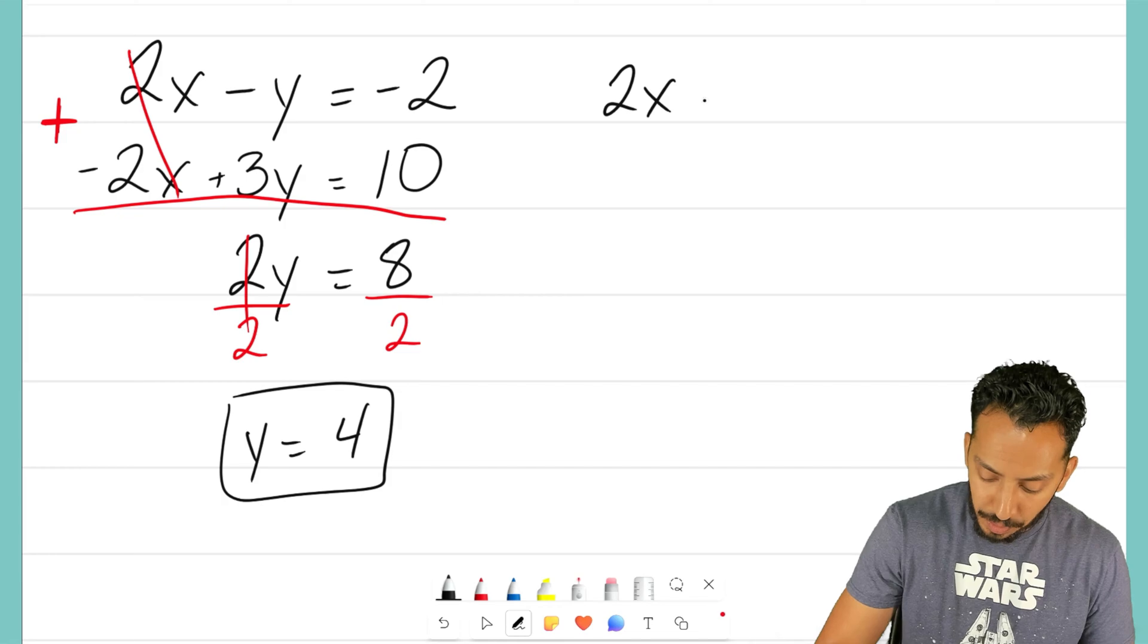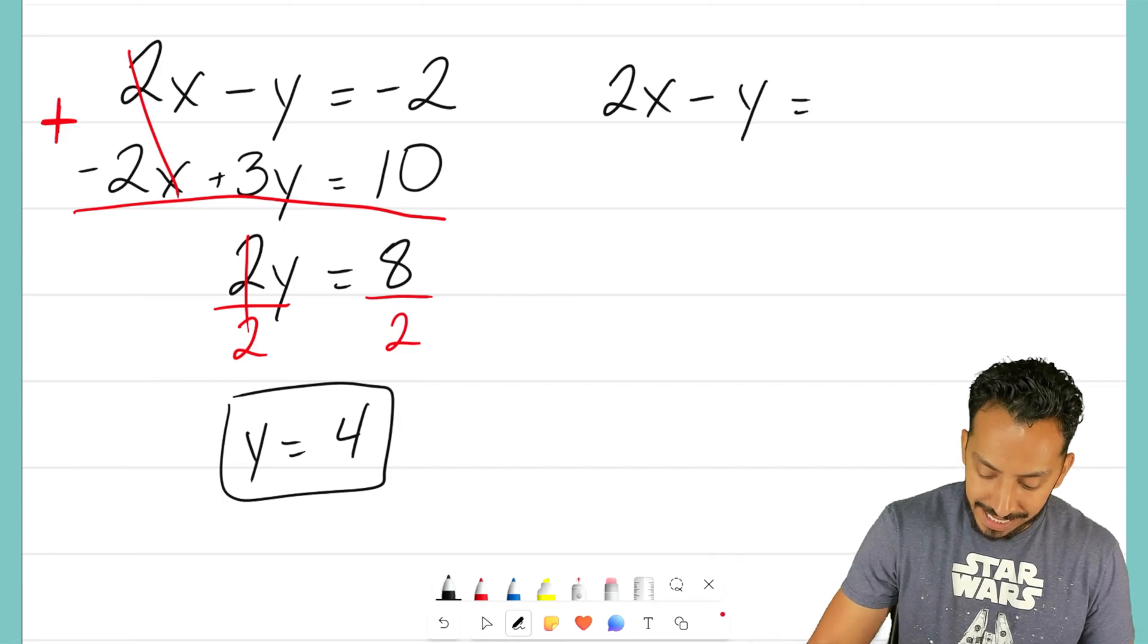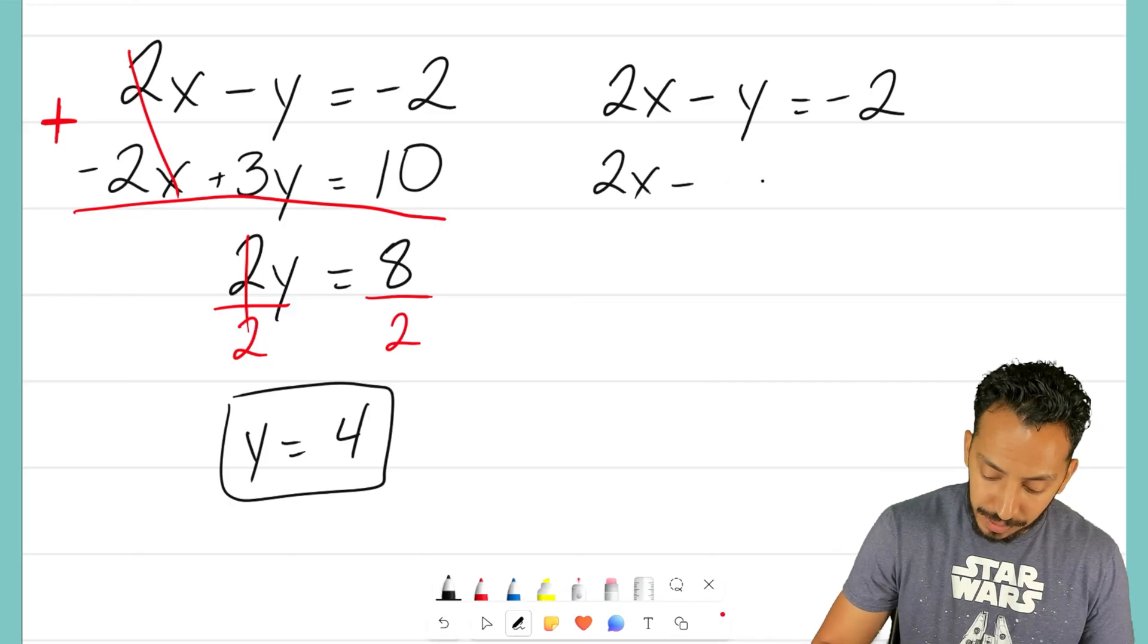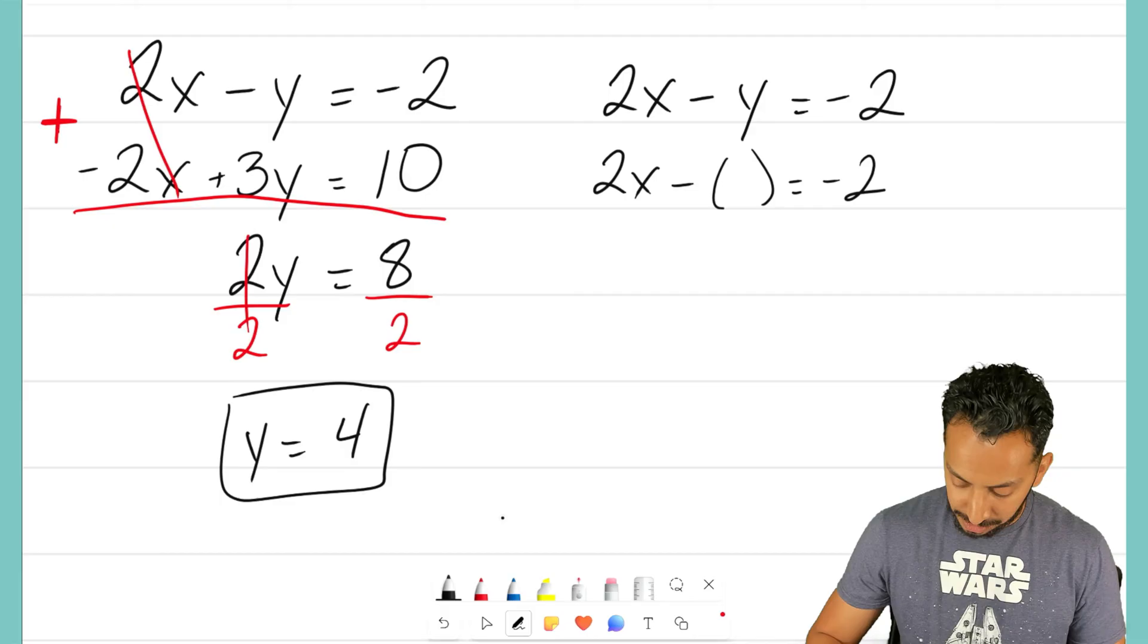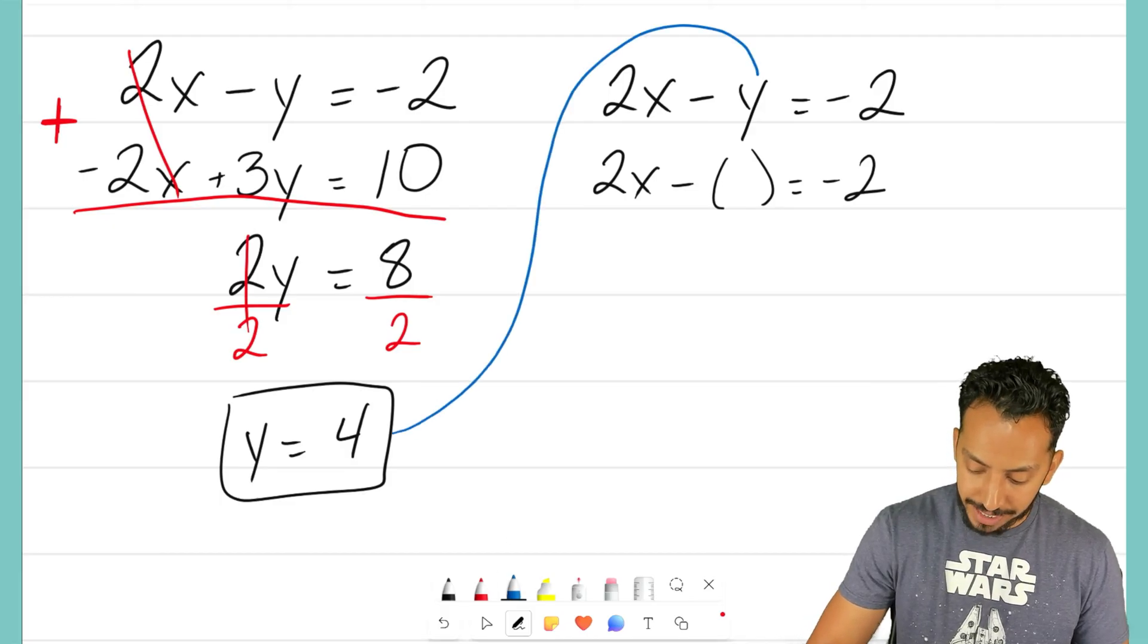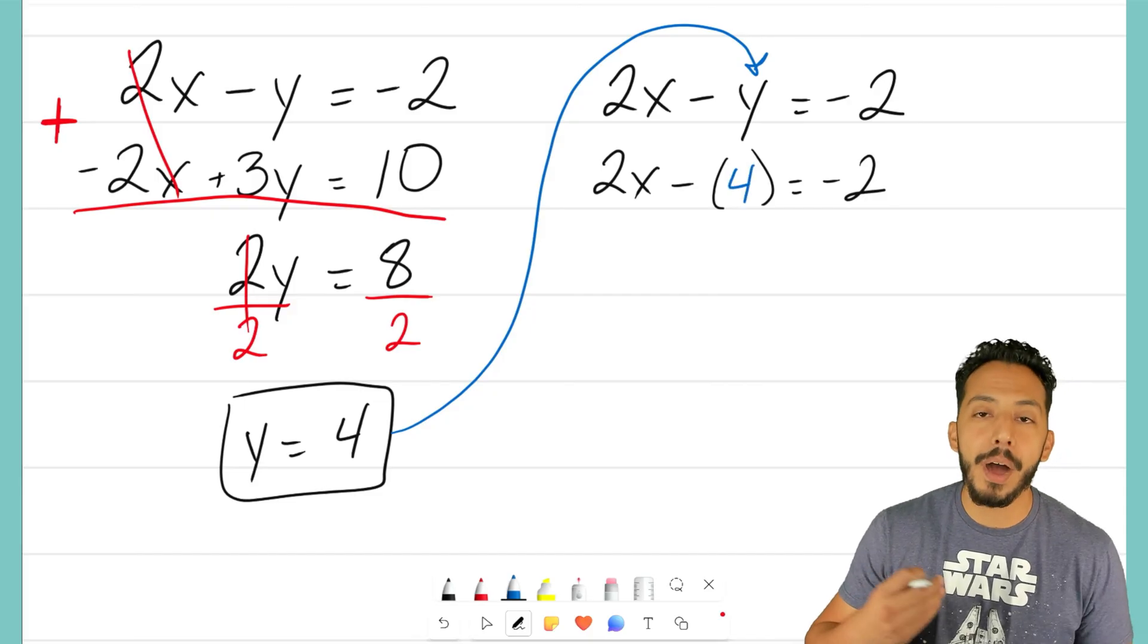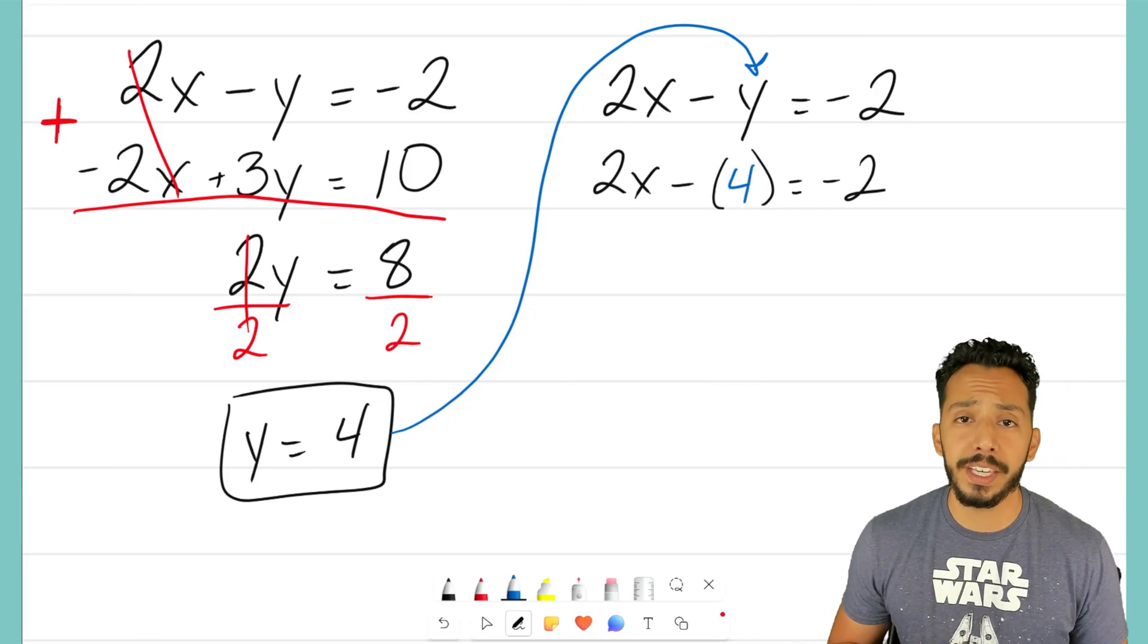So, I'm going to take that top equation, but this time, instead of writing my y variable, I'm going to substitute in what I know that y equals, right? We just solved for that, and we know that y equals positive 4. So, I'm going to drop in that positive 4 into one of the equations.